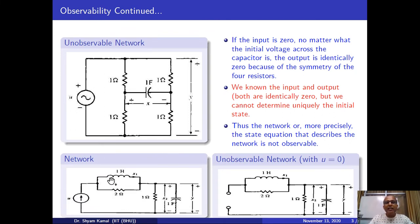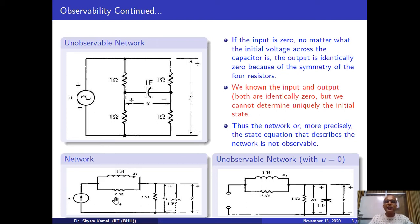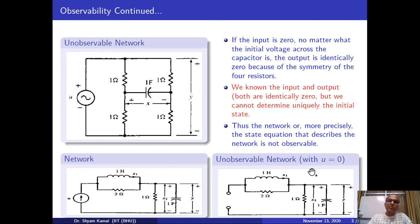Even if you put any initial voltage on the capacitor, the output y equals zero. So input and output are both identically zero, but we cannot uniquely determine the initial state. The circuit has just one dynamic element — the capacitor — giving a first-order differential equation. The output is zero but I cannot predict the unique capacitor voltage, and therefore this network is not observable.